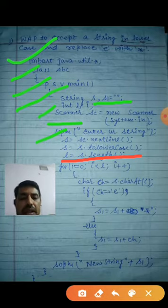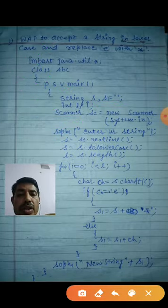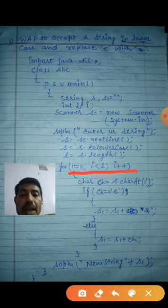Now find out the length of the string. How can you find out? s dot length. So now I will extract one one letters. How will you extract? You start the loop, you write the loop from 0 to less than l. L is what? Length of the string.